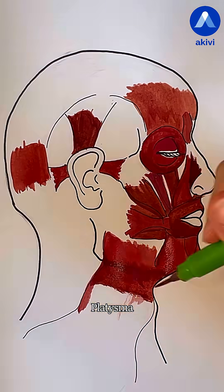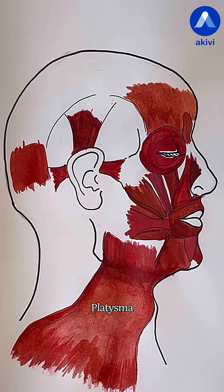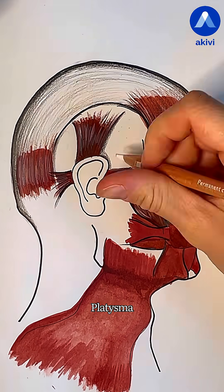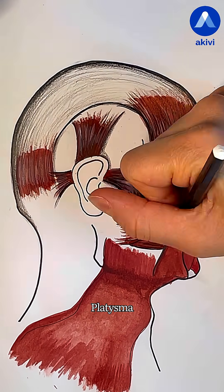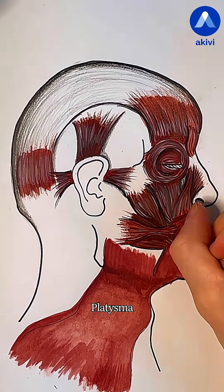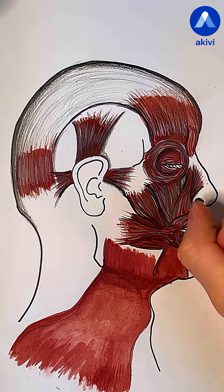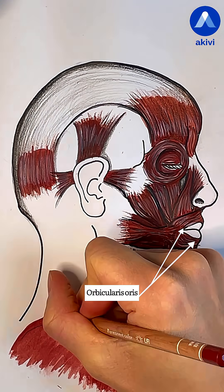Lastly, we have the platysma, a broad thin muscle that covers the front and sides of the neck. This muscle is used in expressions of fear or tension, when the neck tightens and the lower face pulls downward. Now the constrictor muscles.